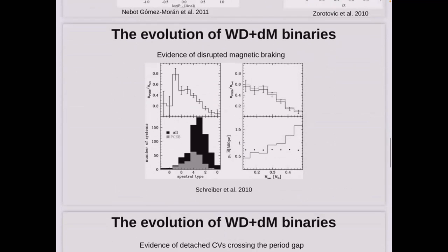Looking at the evolution of these systems: they're not static but evolving towards cataclysmic variables. They're losing angular momentum and spiraling in closer. One of the big predictions of CV evolution is the model called disruptive magnetic braking, where main-sequence stars are losing angular momentum, but if they have a mass below around 0.2 to 0.3 solar masses, they don't suffer from magnetic braking — or at least it is strongly depleted. This is also seen in the population of detached systems, where systems with very low-mass secondaries are more common, simply because higher-mass secondaries experience enhanced angular momentum loss, spending less time as detached systems before becoming CVs.